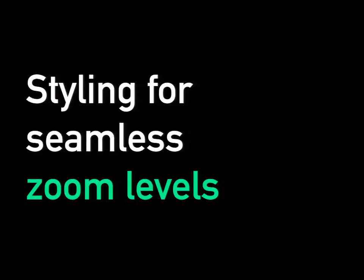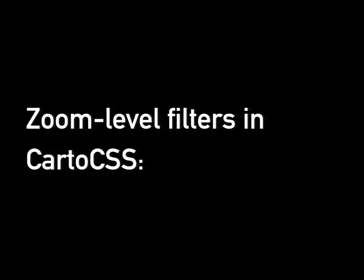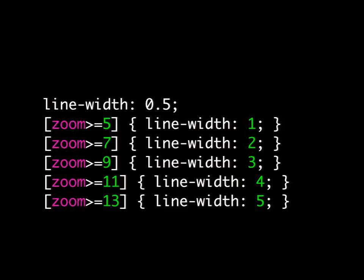I'm going to focus mostly on styling for seamless zoom levels, because in terms of basic things about GL, that's probably the single most important and single most different thing. In Carto CSS, you also style for zoom levels, and you do that with filters. You'd define a zoom level range and explicitly define the value for that property at that range, then do that for all zoom levels where you want a different value.